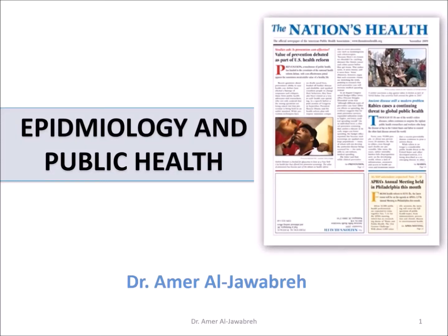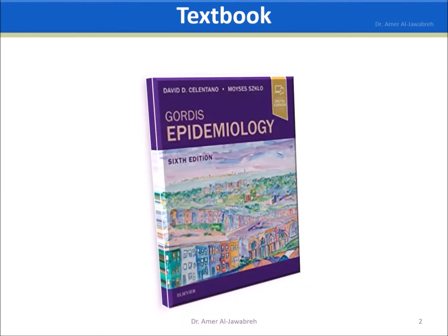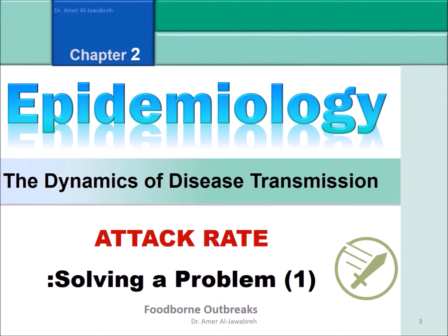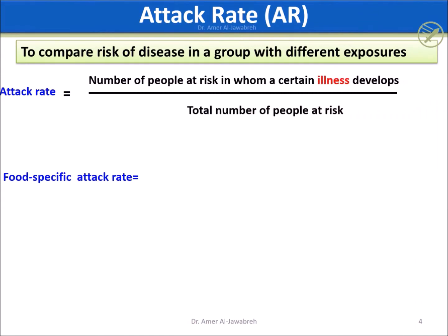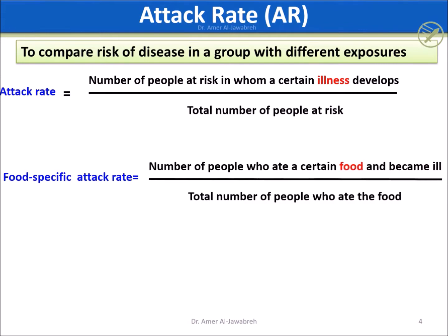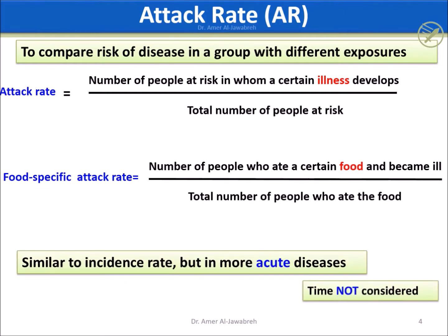Epidemiology and Public Health — from the textbook Gordis Epidemiology 6th Edition. Attack Rate (AR) is the number of infected over the population at risk, such as those attending a party or a wedding. AR equals the number infected who ate a certain food, like tuna, over the total number of those who ate that food. Attack Rate is a form of incidence rate, but used in acute diseases such as foodborne outbreaks.